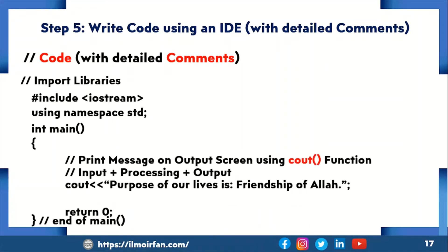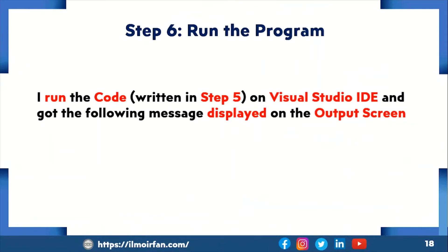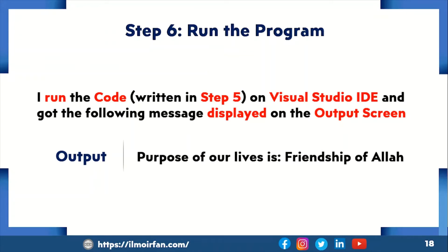I have already written the code for you. Please note that the double backslash in C++ programming language is used for single line comments. Step 6 is run the program. I ran the code written in step 5 on Visual Studio IDE and got the following message displayed on the output screen: 'Purpose of our lives is friendship of Allah.'